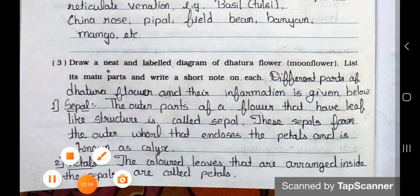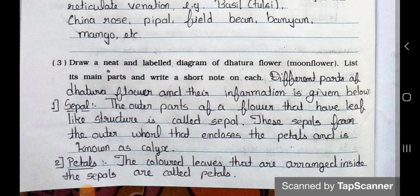Now see, question number 3. Draw a neat element and label diagram of dhatura leaf moonflower. Dhatura leaf means moonflower. List its main parts and write a short note on each. Answer is, different parts of dhatura flower and their information is given below. Number 1, sepal. The outer parts of a flower that have leaf-like structure is called sepal. This sepal forms the outer whorl that encloses the petal and is known as the calyx.